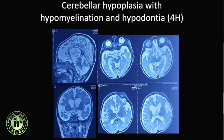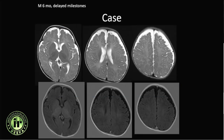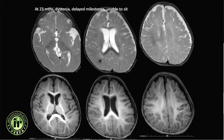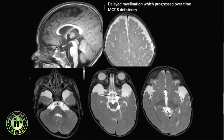Another patient had cerebellar hypoplasia with hypomyelination and hypodontia, with hyperintense signal, and on clinical examination hypodontia and cerebellar atrophy were confirmed. A six-month-old with delayed milestones and diffuse hypomyelination at six months showed development of myelination by 23 months — this is not permanent hypomyelination. On T1-weighted images the brain appeared good, with prominence of the sylvian fissures and an incidental cavernoma in the right temporal lobe.